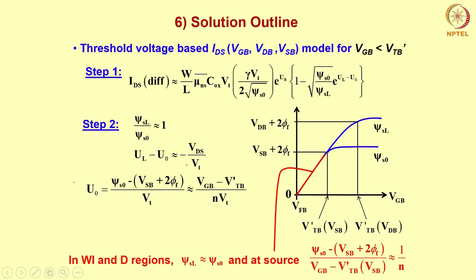For u0: u0 = (ψs0 − Vsb + 2φf)/Vt. Using the linear approximation for ψs0, the numerator ψs0 − Vsb − 2φf = (Vgb − V'Tb)/n. Therefore u0 = (Vgb − V'Tb)/(nVt). This is a very important result: u0 varies linearly with Vgb, meaning ψs0 varies linearly with Vgb.